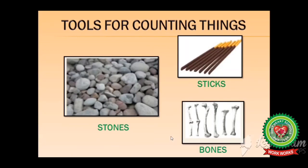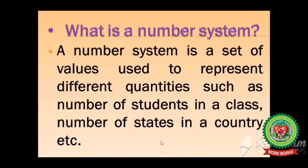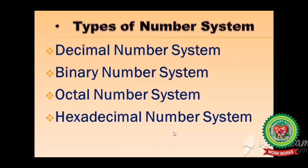To overcome these limitations, many number systems were introduced with the passage of time. Now the question arises: what is a number system? A number system is a set of values used to represent different quantities, such as number of students in a class, number of states in a country, etc. We have four types of number system.